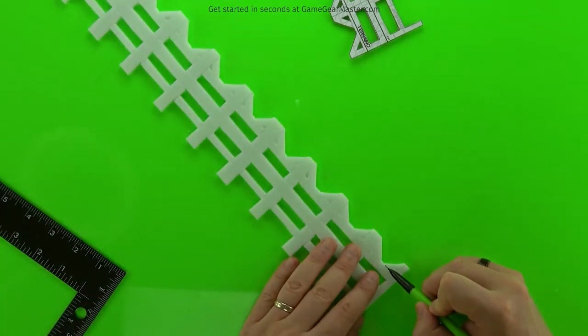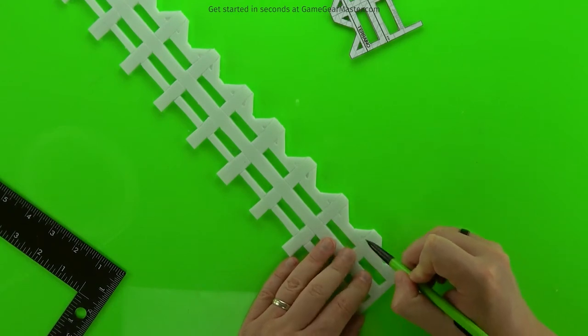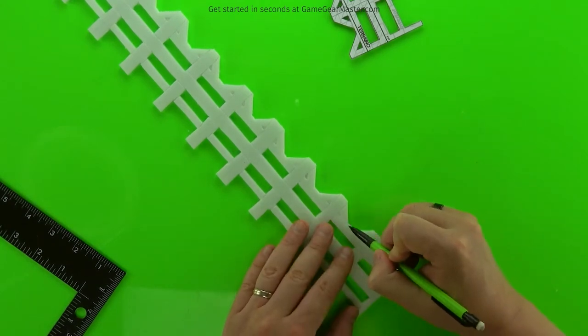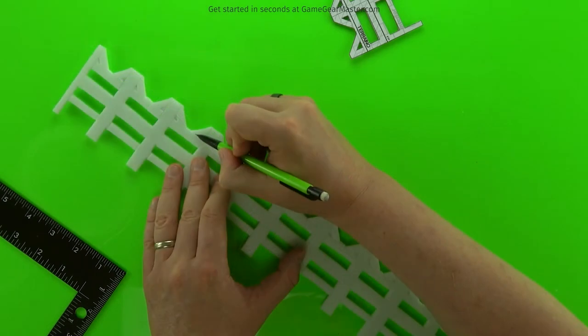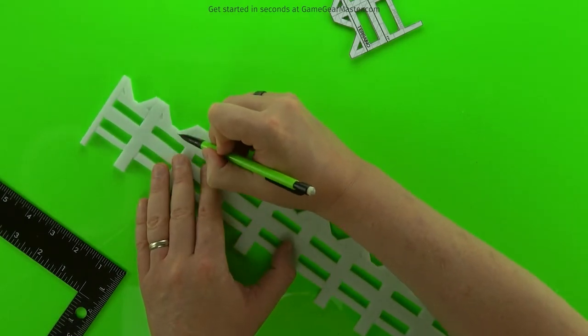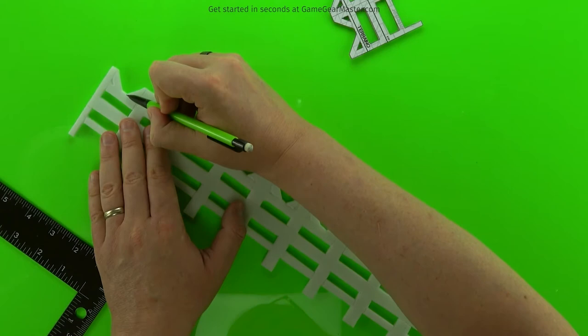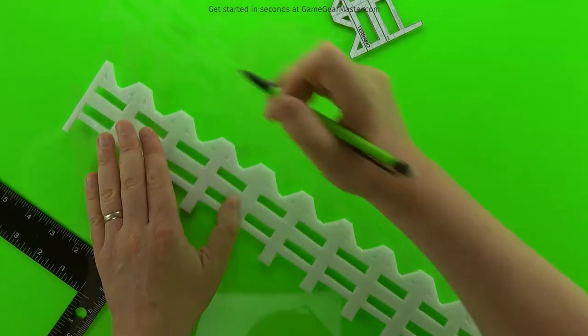And once I've gotten all the wood beams drawn in, it's time to do the wood grain texture. And the wood grain texture is really simple. You just draw little squiggly long lines along the beams of wood.